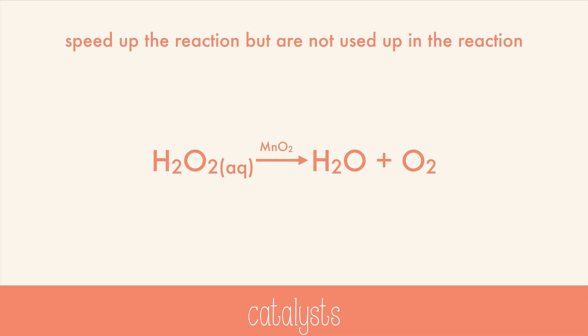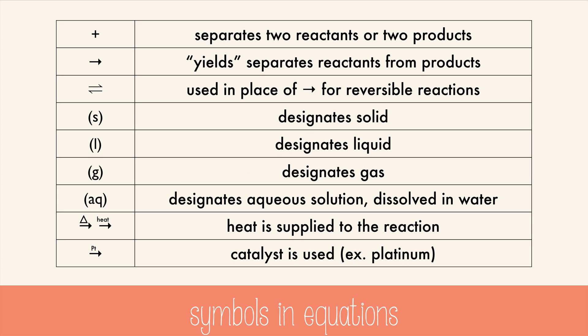Notice that little descriptor by the reactant hydrogen peroxide? There are lots of helpful symbols that can be used in equations. This one means aqueous. These symbols are commonly used in equations to add more information about what's happening in the reactions. It could be information about the state of matter, whether heat is applied, or whether a catalyst is used.